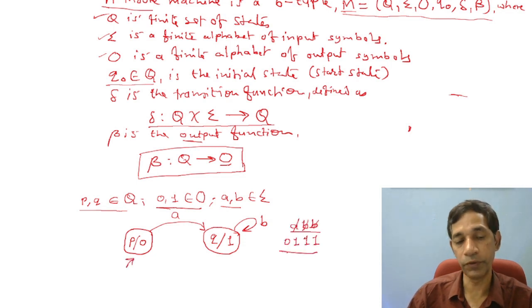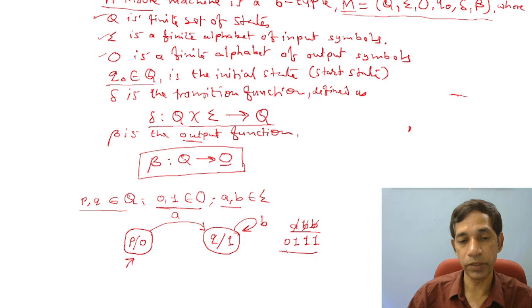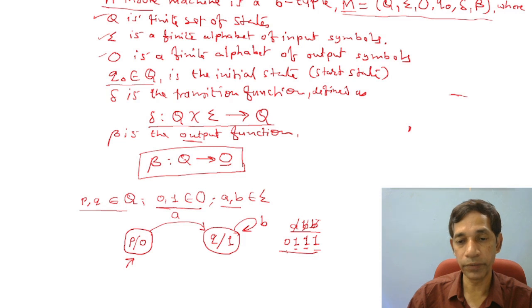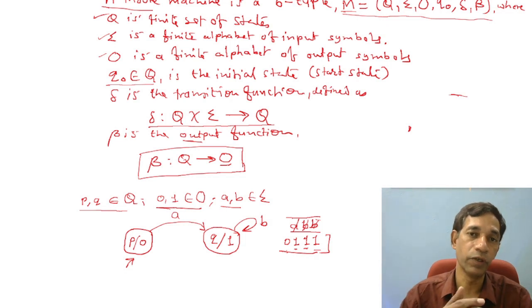When you are at state p, your machine outputs 0. When you are at state p with input a, your machine goes to state q. As soon as you enter state q, you have output 1. Whenever you are at state q with input b, your machine remains in the same state and outputs 1. So from state p, if you have the substring a, b, b..., you are getting the corresponding output. This is the way your machine produces output.